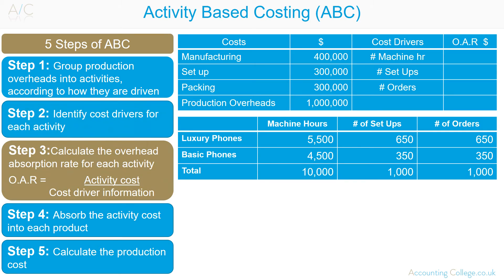Step 3: Calculate the overhead absorption rate for each activity. For example, say we have two types of phones: a luxury phone and a basic phone. The luxury phone takes 5,500 machine hours, 650 setups, and 650 orders.